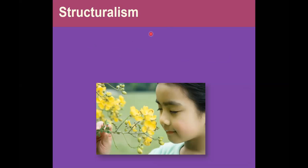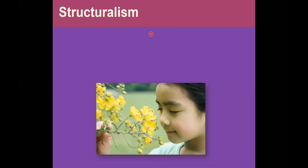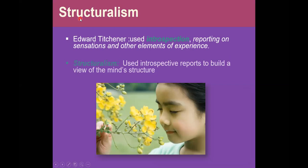Following Wundt, some of his students were champions of structuralism. Structuralism in psychology means they were trying to build a model of the structure of the mind — to diagram how various parts of the mind work together.